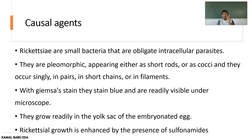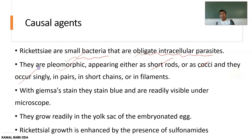Regarding the causal agents, rickettsial agents are small bacteria and are obligate intracellular parasites. They are pleomorphic in nature, appearing either as short rods, cocci, or filamentous forms. They occur singly, in pairs, or in short chains — meaning they appear in different types of shapes and structures.